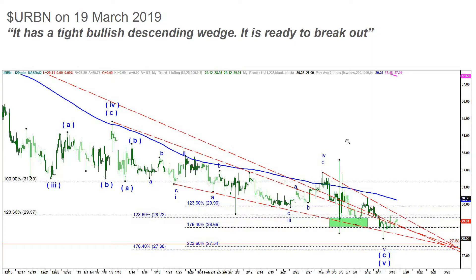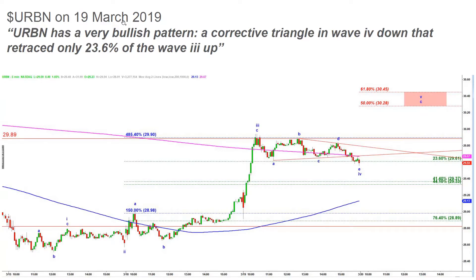On March 19th 2019 I zoomed out to a 2-hour chart to show my followers my bullish perspective. I posted that it has a tight bullish descending wedge and it's ready to break out. The slope of the support was not as steep as the slope of the decline — showing that bulls were able to defend that line several times and bears were exhausted. On that day a new rally started — if we did not close under $28.80 I said we would get a rally at least to $30, and this is exactly what we got.